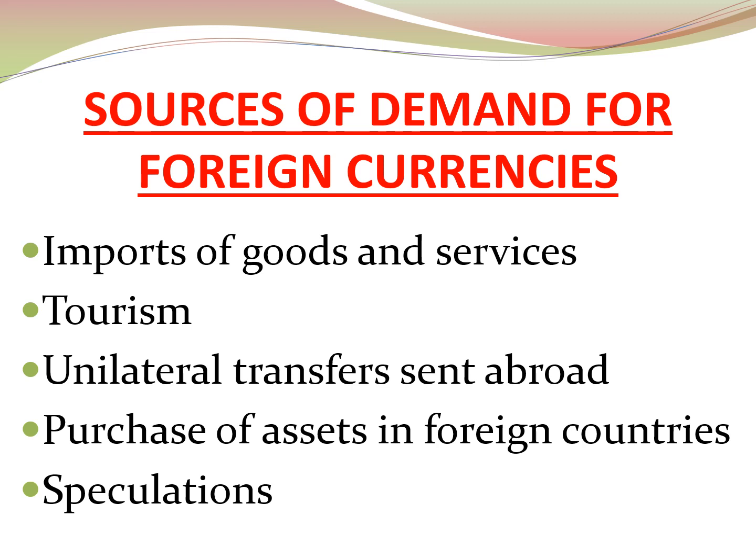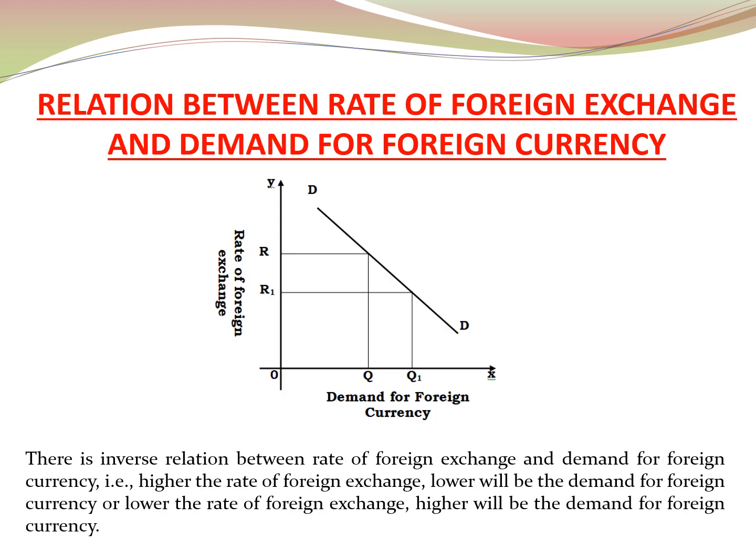If we observe the relation between the rate of foreign exchange and demand for foreign exchange, both are inversely related. In the figure shown here, DD is the demand curve for foreign exchange, which is sloping downwards from left to right. When the rate of foreign exchange is OR, the demand for foreign currency is OQ. When the rate of foreign exchange is OR1, the demand for foreign currency is OQ1. This shows that higher the rate of foreign exchange, lower will be the demand for foreign currency, and lower the rate of foreign exchange, higher will be the demand.